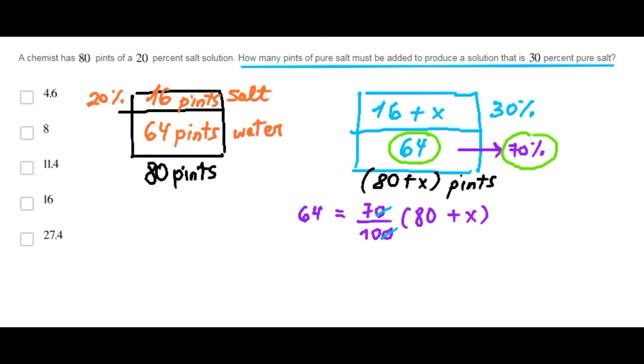I will cancel zeros. Cross multiply. 640 is 560 plus 7 times x.